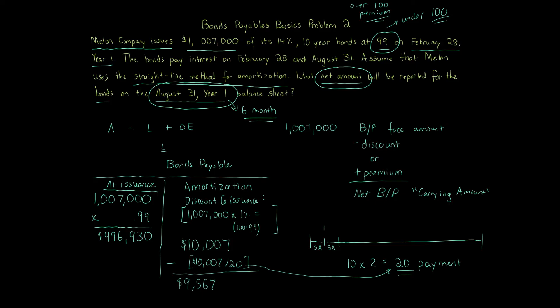So we take our bonds payable of $1,007,000, subtract the updated discount of $9,567, and get our final answer: a net carrying amount of $997,433 on the August 31st, year 1 balance sheet. Going forward to February 28th, year 2, we would take the $9,567 updated discount and amortize it again by subtracting $10,007 divided by 20. After 10 years, the discount reaches zero and the bond is fully paid off the books.